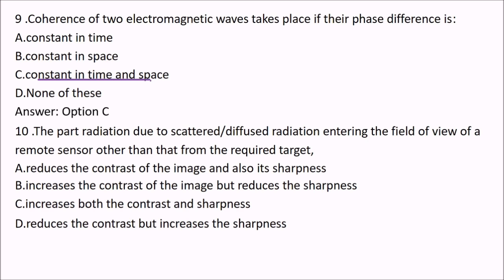Next question: the part of radiation due to scattered or diffused radiation entering the field of view of a remote sensor, other than from the required target — how does it affect the image? There will be various radiation received. The answer is A: it will reduce the contrast of the image and also its sharpness. A reduction of contrast and sharpness takes place from that scattered or diffused radiation.